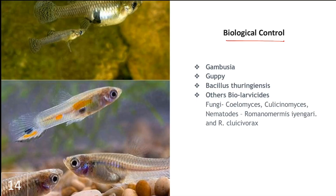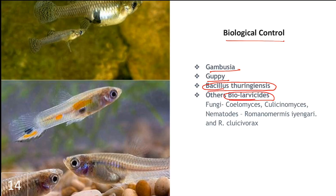Biological control is the introduction of organisms that prey upon, parasitize, compete with or otherwise reduce populations of the target species. Against mosquitoes, a variety of larval fish species and copepods are available and effective. Species include Gambusia, Guppy, Bacillus thuringiensis (Bt), and other biolarvicides including fungi and nematodes. Bt is available as powders or granules containing bacteria spores or toxic crystals, and produces an endotoxin which after ingestion by the mosquito causes gut paralysis and leakage of contents into the body cavity, ultimately resulting in the death of the mosquito.